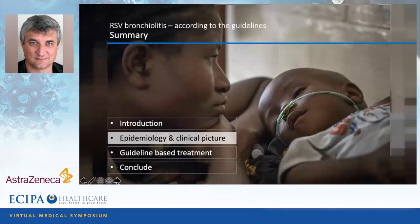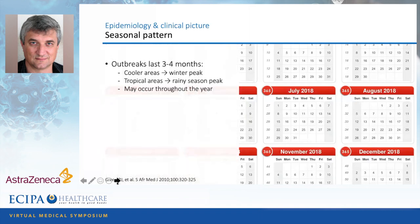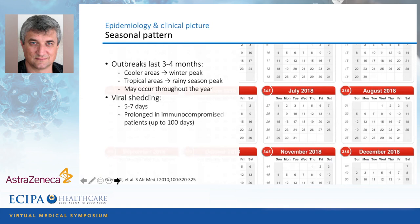Regarding epidemiology and clinical picture: the infection comes with a seasonal pattern. We usually have outbreaks lasting about three to four months. In cooler inland areas, this usually happens during the winter months. In tropical coastal rainy areas, it happens during the warm rainy season, like December in Durban, for example. But it may occur throughout the year.